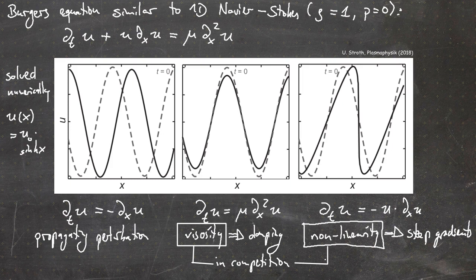That's it for this video, where we looked at the dimensionless form of the Navier-Stokes equation and introduced the very important Reynolds number, which determines the state of a fluid. We looked at a few examples, introduced the Kármán vortex street, and looked at the Burgers equation — similar to the 1D Navier-Stokes equation — to examine the role of the different terms. See you in the next video.